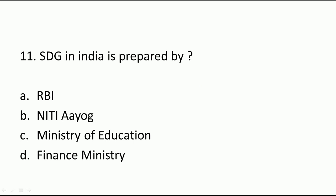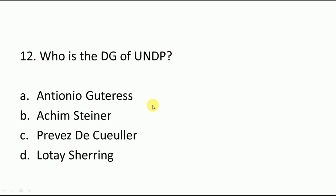Next: SDG in India is prepared by which organization? Which organization prepares it and monitors our goals? It is prepared by NITI Aayog, which also releases reports on who has performed better. NITI Aayog, whose CEO is Amitabh Kant and Chairman is Prime Minister Modi. Who is the Director General of the United Nations Development Programme? This is the main UN agency for SDG implementation globally. Its Director General is Achim Steiner.